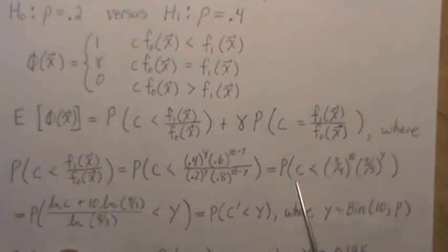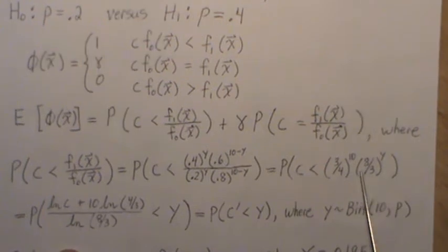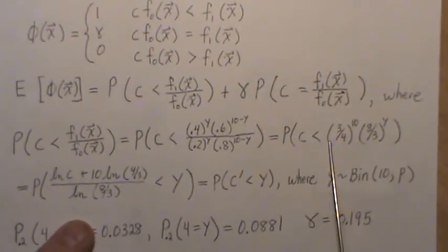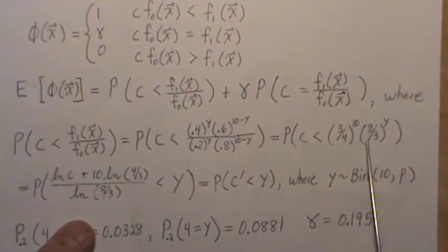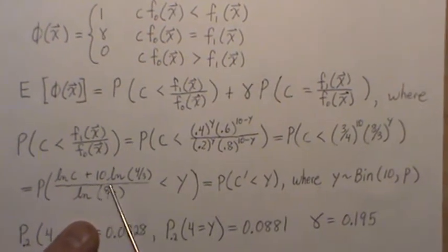And so this piece can simplify to this. Then if we divide that piece over, take the natural log of both sides, and then divide, the Y comes out front and we get this. So yeah, I left Y on this side and then took all the constants to this side.